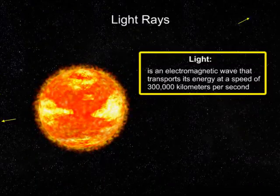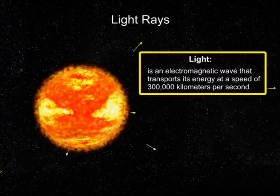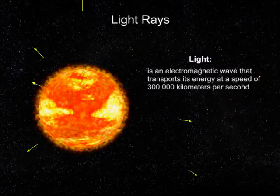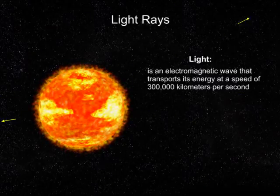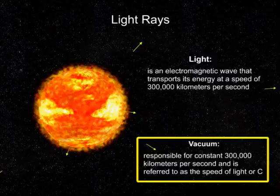Light is an electromagnetic wave that transports its energy at a speed of 300,000 kilometers per second. This constant speed is how fast light travels in a vacuum and is referred to as the speed of light, or C.